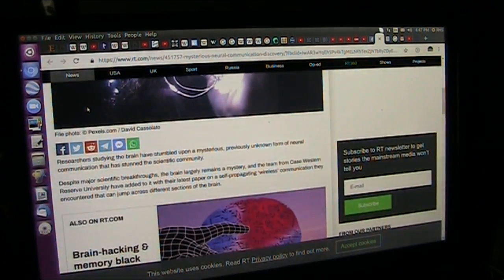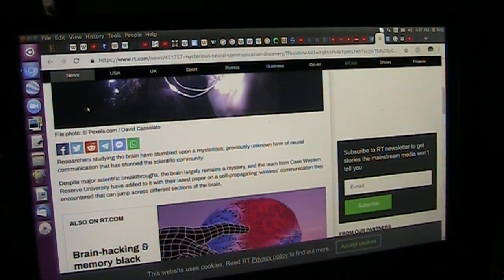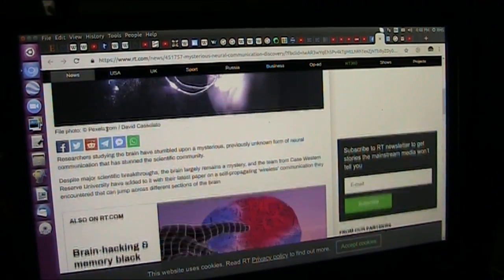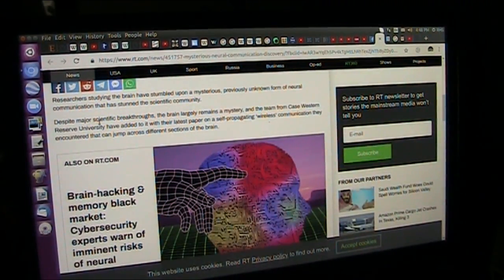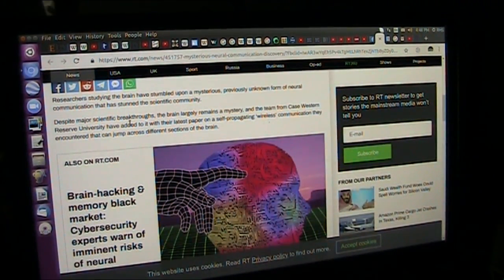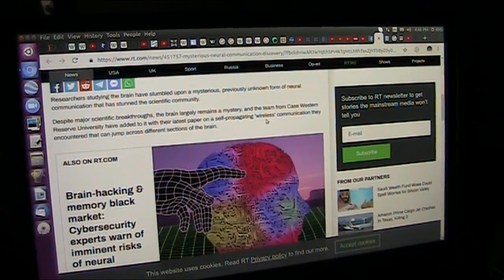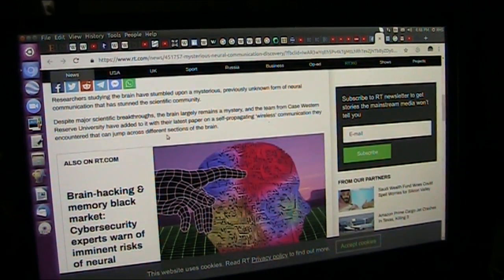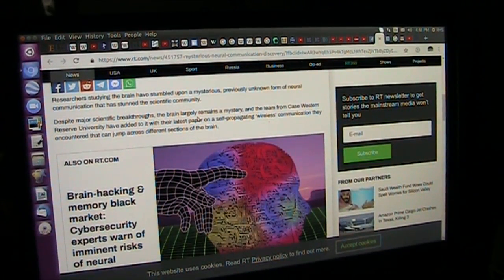So they're looking into this and saying researchers stumbled upon a mysteriously, previously unknown form of neural communication that stunned the scientific community. Despite major scientific breakthroughs, the brain largely remains a mystery. Well, you're not kidding. And the team from Case Western Reserve University have added to it with their latest paper on a self-propagated wireless communication that can jump across different sections of the brain. They have added to the mysteriousness of the brain.